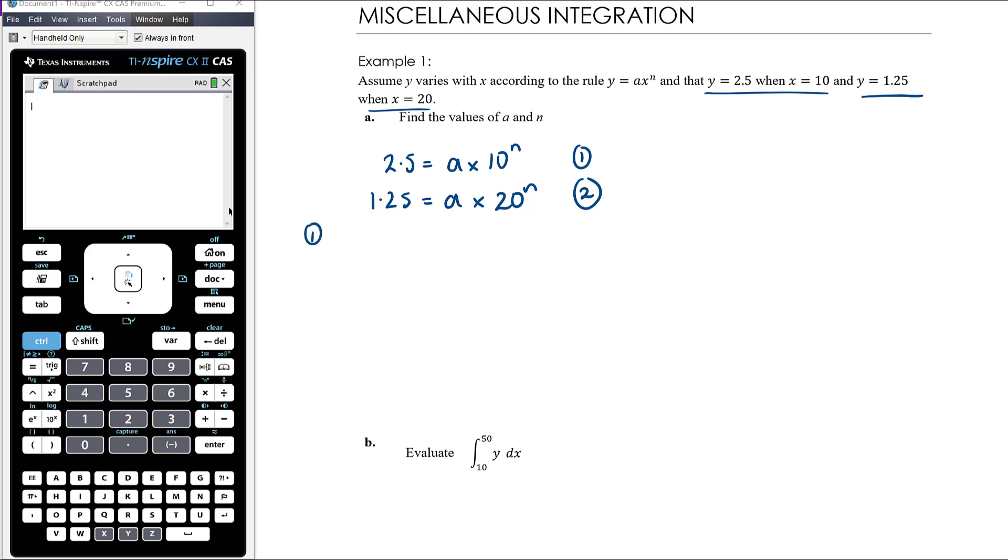If we do equation 1 divided by equation 2, we get 2.5 over 1.25, which is 2, and then we get a times 10 to the n over a times 20 to the n. The a's cancel out, so we have 2 over here, and on the right hand side we've got 10 on 20 all to the power of n. So we've got 2 equals half to the n, so that is 2 equals 2 to the negative n, and therefore negative n equals 1 and n equals negative 1.